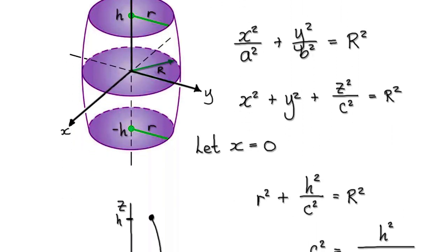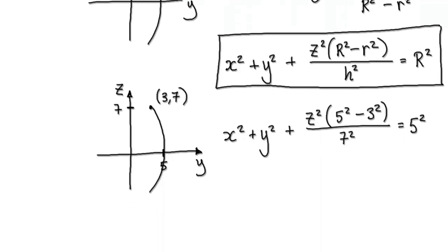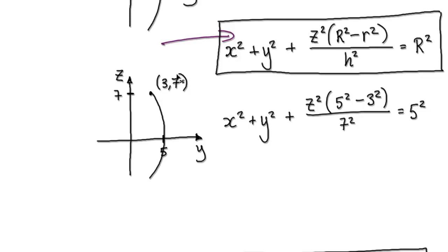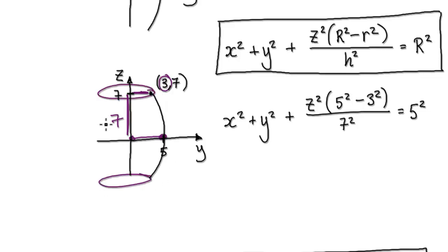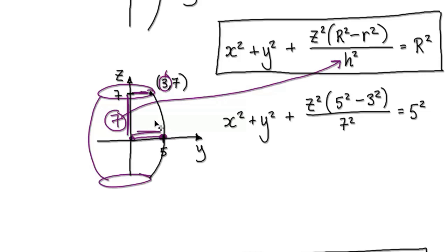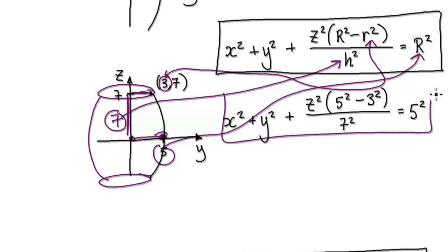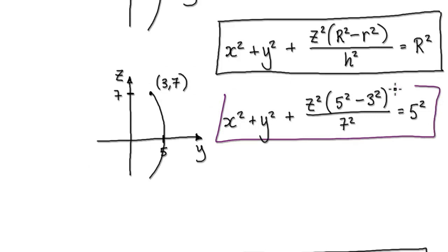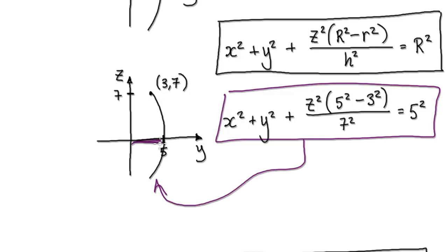Following on from the previous video, we got to this stage here. So what that means is if you're trying to create a barrel with a large radius of 5, a small radius of 3, and a height of 7, then you would put 7 into H, put 3 into the small r, and put 5 into the big R. If you get a 3D graph plotter and punch this in, it should give you a barrel where the large radius is 5, the small radius is 3, and the height is 7.